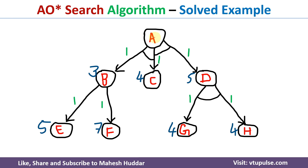In this case, there are two paths available. One path is towards B and C, and another path is towards C and D. Because we have AND here, we need to solve both B and C to solve A. Similarly, if we solve C and D, then we will be able to solve A. So first, we will see the cost for both of these paths.